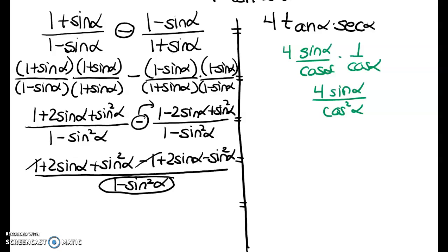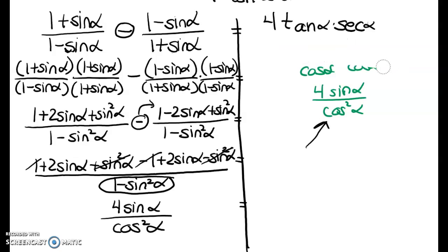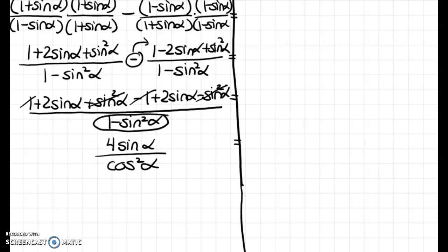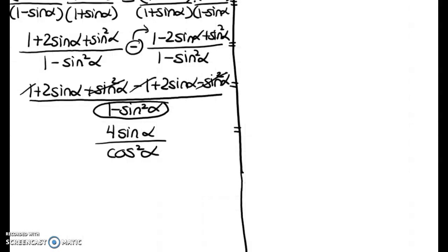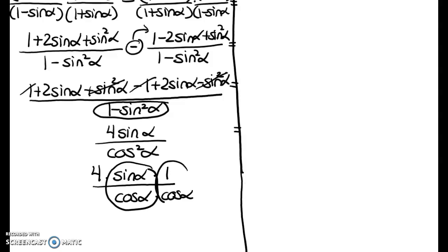So what's going to reduce out here? My 1s reduce out and my sine squareds reduce out. So 2 sine of alpha plus 2 sine of alpha is 4 sine of alpha over cosine squared alpha. And that's exactly what I had written on this side over here. So now I'm going to split this up a little bit: sine of alpha times 1 over cosine of alpha times cosine of alpha. You can see there's my tangent and there's my secant.